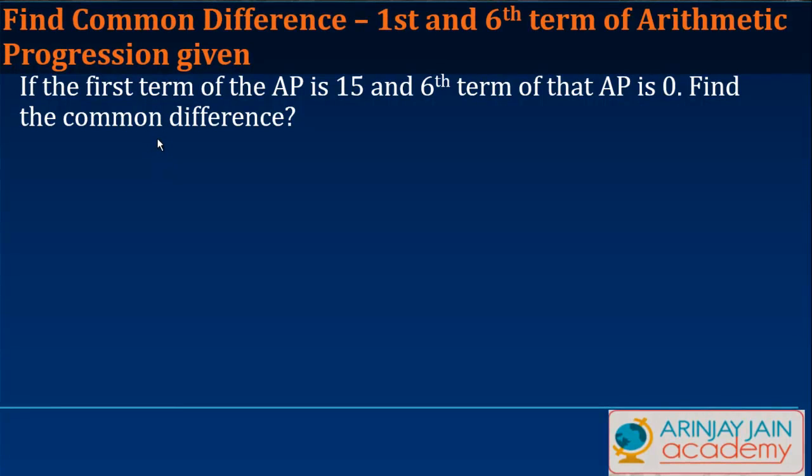In this video we will find out the common difference when the first and the sixth term of the arithmetic progression are given. If the first term of an AP is 15 and the sixth term of that AP is 0, find the common difference.